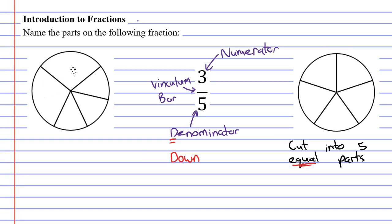Notice that this circle has been cut into 5 parts, but the parts are not all equal. They're not equal in size. When you draw fractions, your parts have to be cut into equal parts.